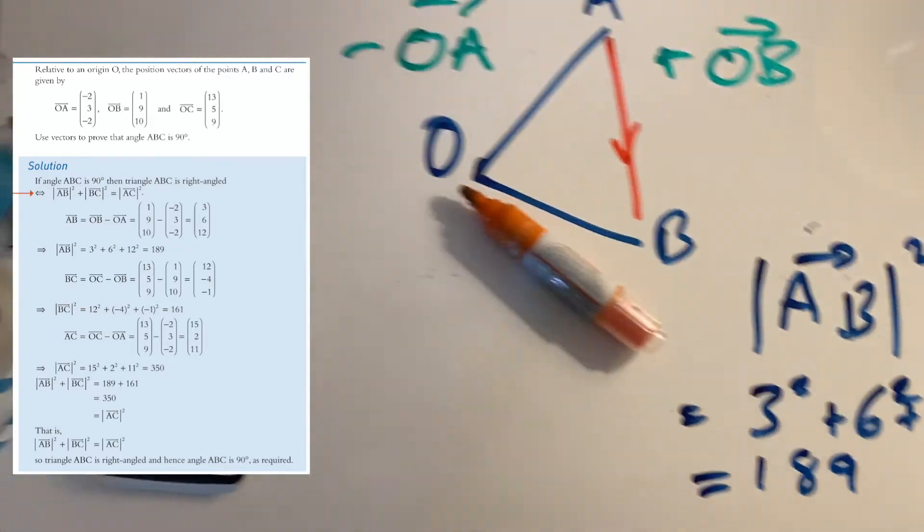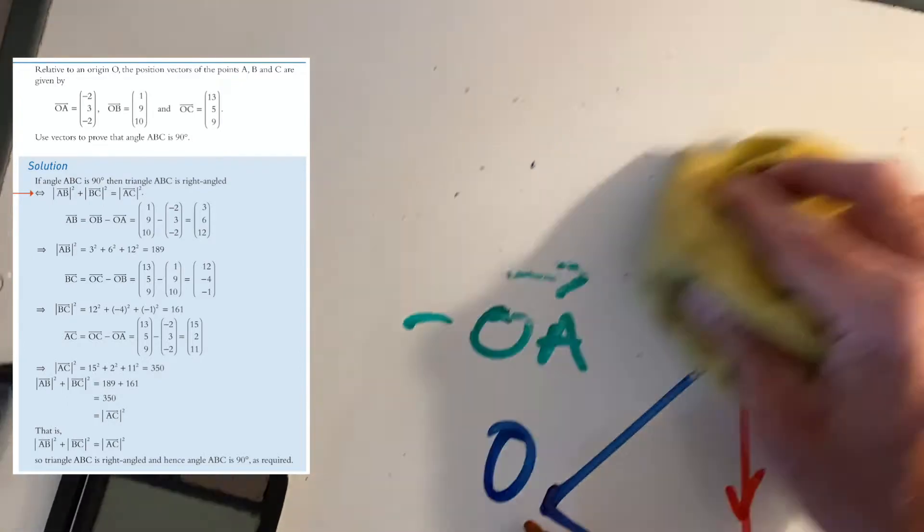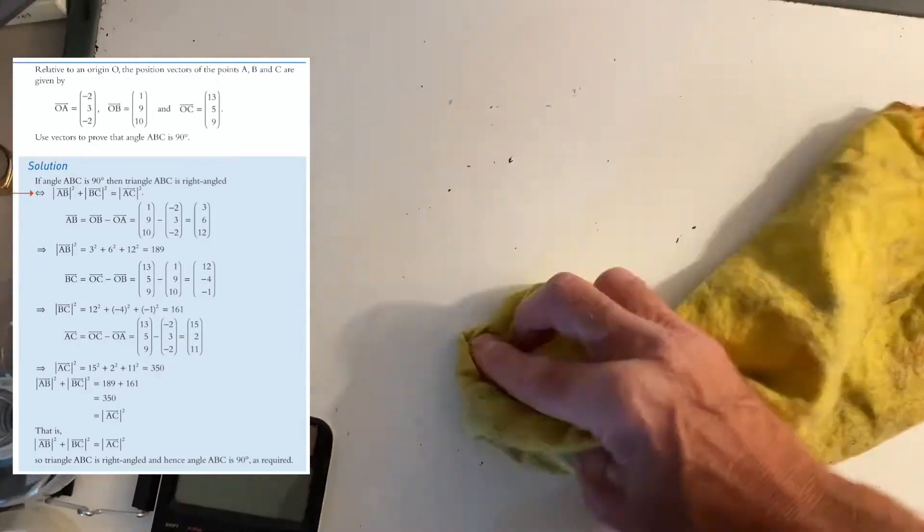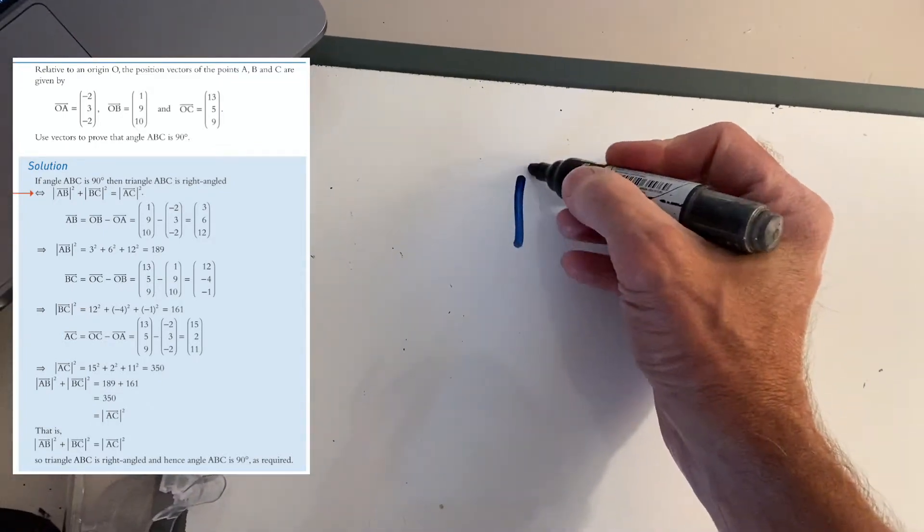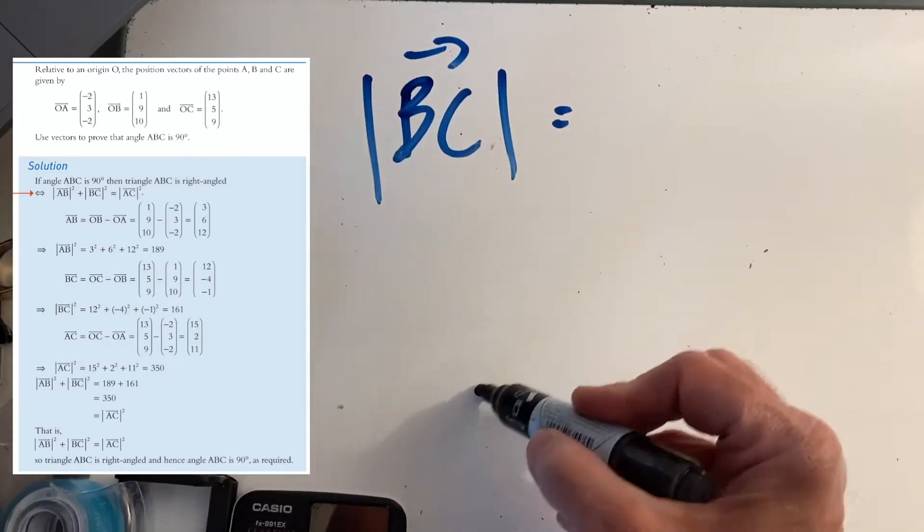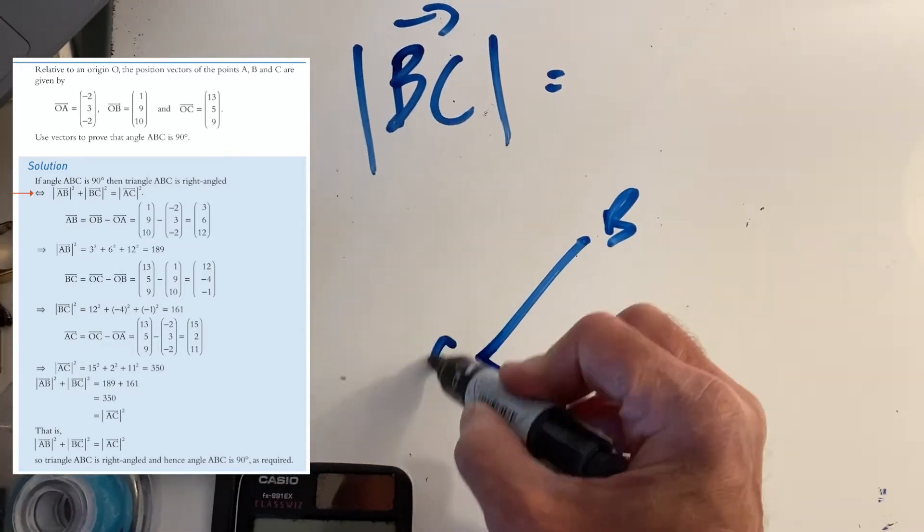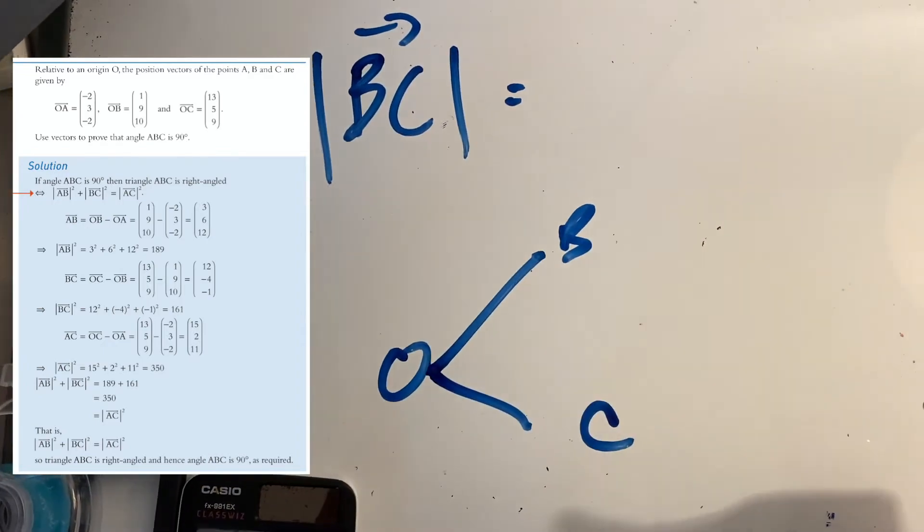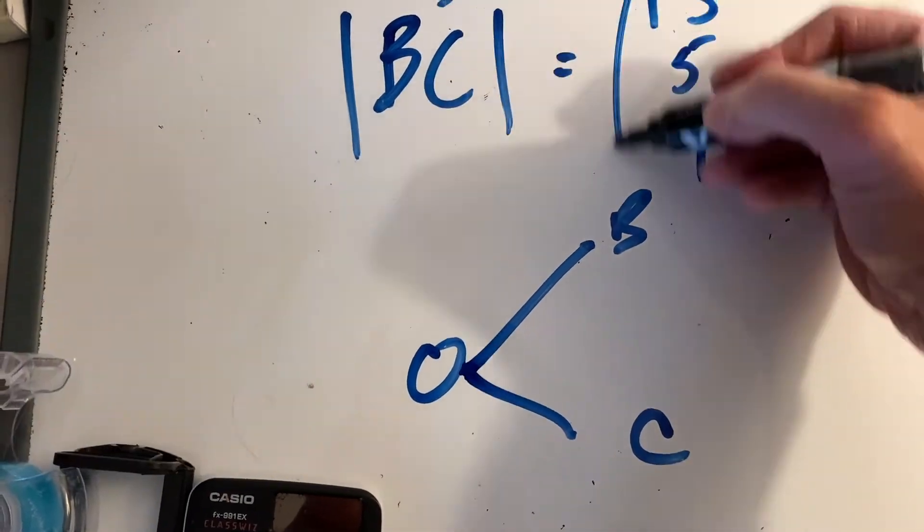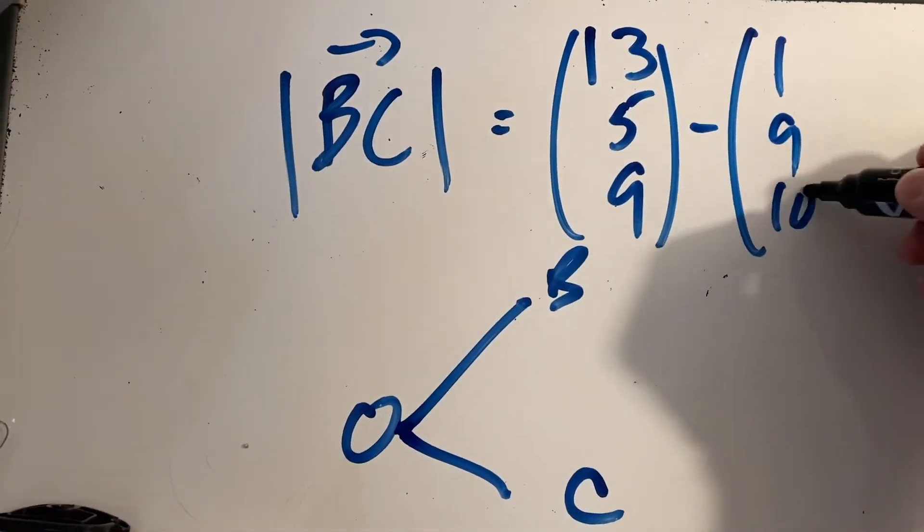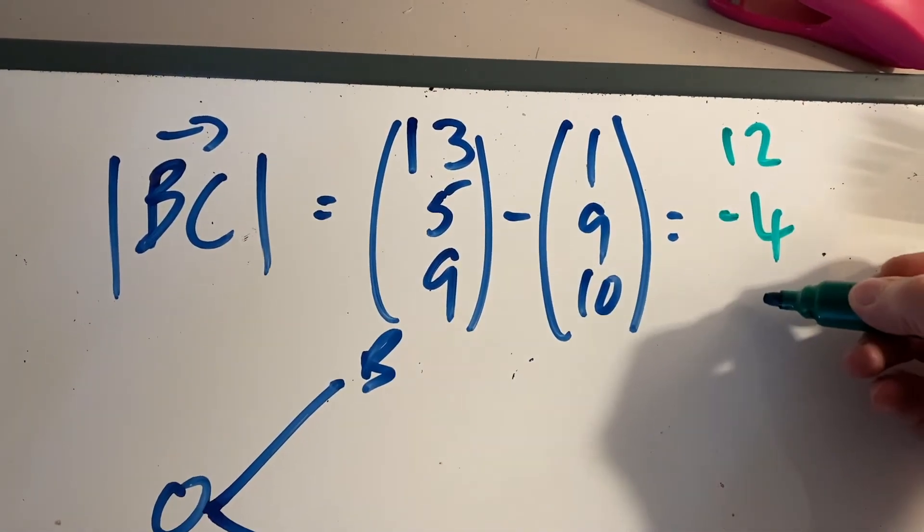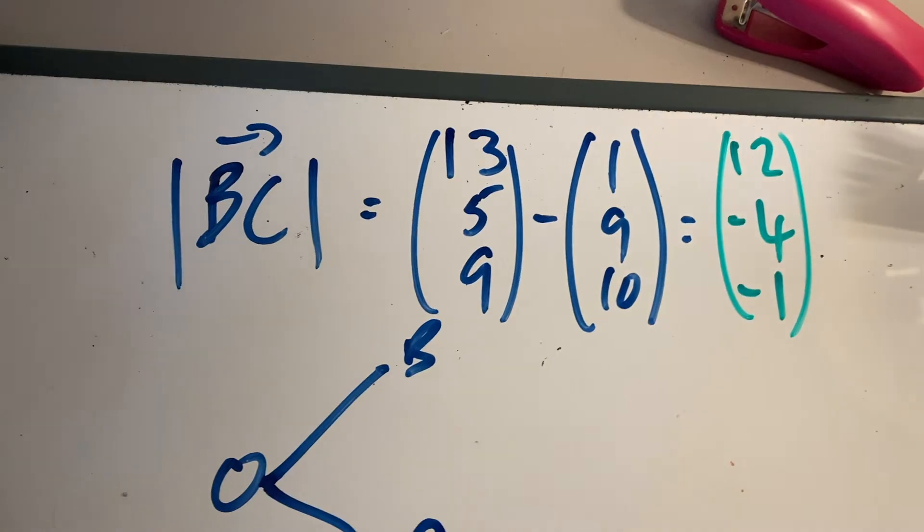Now what we want to look at is BC. Same idea. Think about this: if you're going from B to C, first of all let's work out what the vector B to C is. Let's think about this—this is our B, that's our C, so we're going to go backwards. We're going to do OC - OB. So OC - OB: (13, 5, 9), don't worry about the cat he's just hungry, minus (1, 9, 10). So that equals (12, -4, -1).